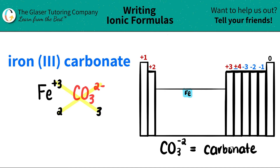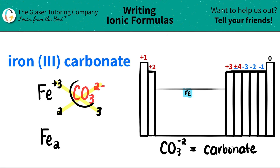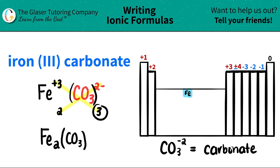Now we're ready to write our compound. We have iron, and it's telling me that I need two of them. Here's the thing, guys — if you have multiple polyatomics, I need to see parentheses around it. So I'm going to put parentheses, put the polyatomic — in this case it's CO3 — and then say how many you have. I have three carbonates. And now you are done.